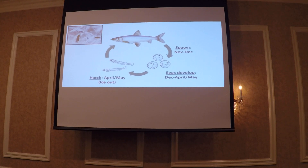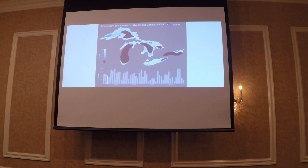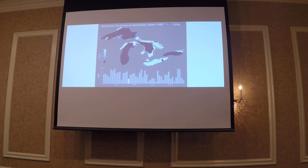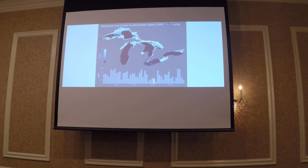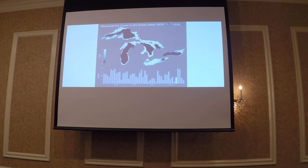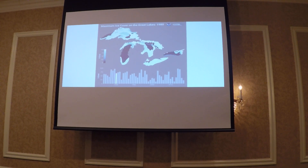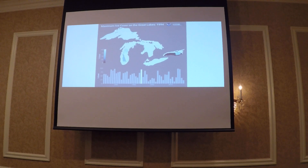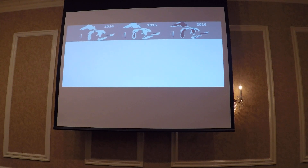Their larvae tend to hatch out around ice-out. What we do know about climate change in the Great Lakes during winter is that, unfortunately, it means less ice. This is a cool GIF from GLERL showing over the past 40 or so years the variability of ice coverage in the Great Lakes. Blue means zero ice coverage, white means at some point that winter there was 100% ice coverage. But overall, there have been papers showing that ice coverage is definitely declining in all of the Great Lakes. So we can start to think about what reduced ice coverage means in general.